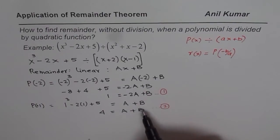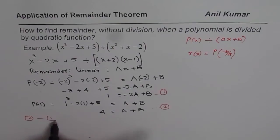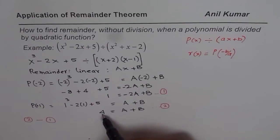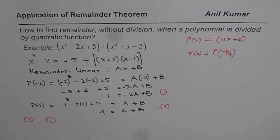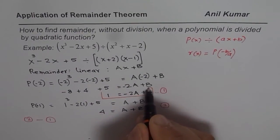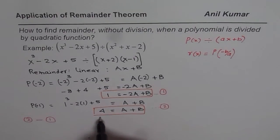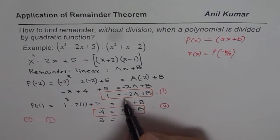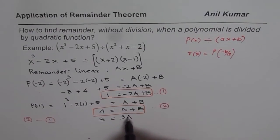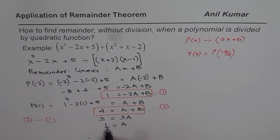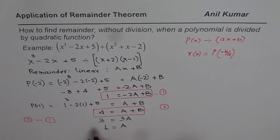We have two equations with two unknowns, so we can solve them very easily. If we do equation 2 minus equation 1, we get 4 minus 1, which is 3, equals A minus minus 2A, that gives us 3A. B minus B is 0, so we get 3A equals 3, or A equals 1.